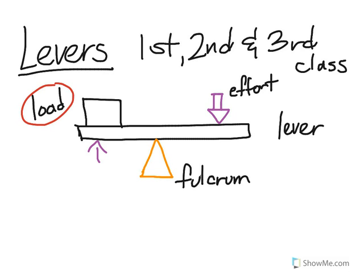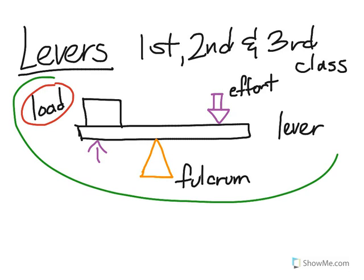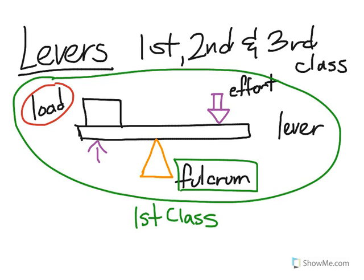So this, what I've just drawn for you, is a first class lever. And the reason why it's a first class is because the fulcrum is in the middle of the lever. And the load is on one side, and the effort is on the other side. Again, the primary example for this, or the classic example for this, is a seesaw.